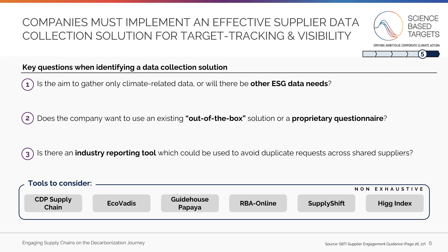The final step in implementing targets is to put in place a solution for collecting supplier data. This data is critical for your supplier engagement program, both for your target tracking purposes and to enable visibility of your supplier's program maturity. You should ask three key questions to determine which solution to use. First, is the aim to gather only climate-related data, or will there be other ESG data needs? Second, do you want to use an existing out-of-the-box solution or a proprietary questionnaire? And third, is there an industry reporting tool which could be used to avoid duplicate requests across shared suppliers? These questions will help narrow down on the solution which best meets your needs. At the bottom of this page, we've listed some off-the-shelf examples of solutions for collecting supplier data, with more details on each included in Section 5 of the full guidance.